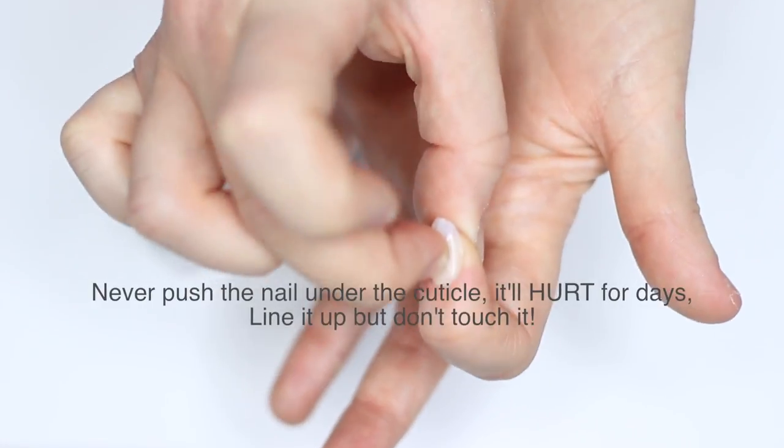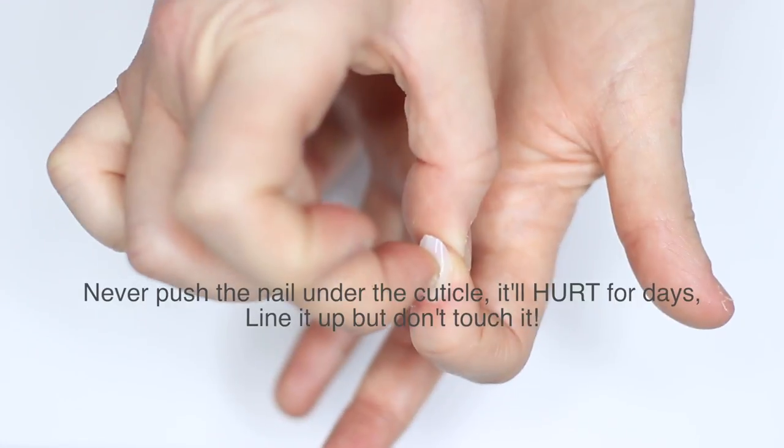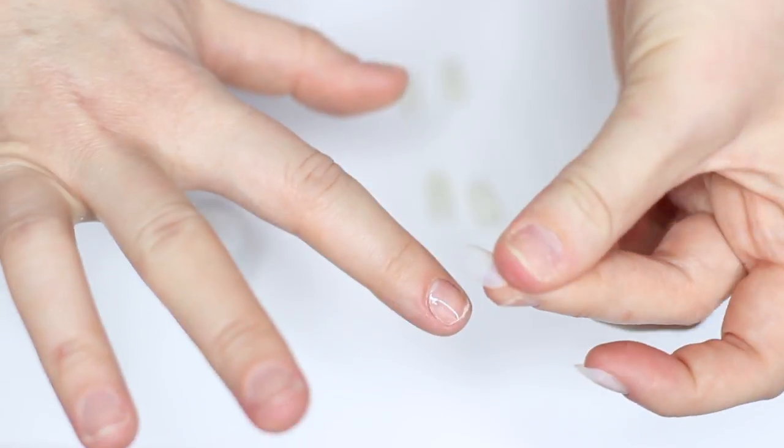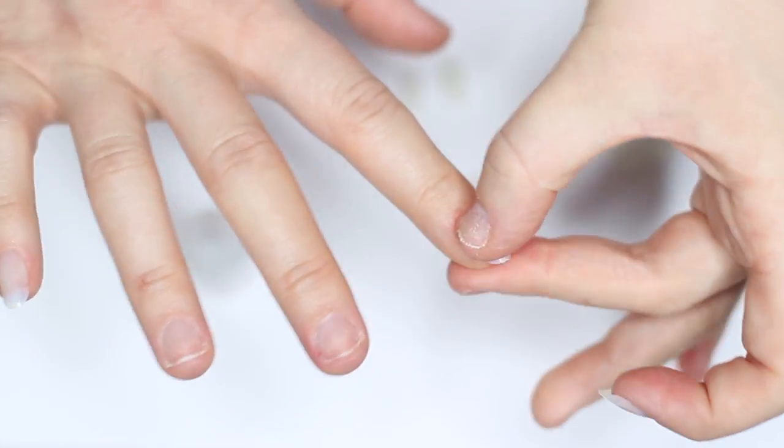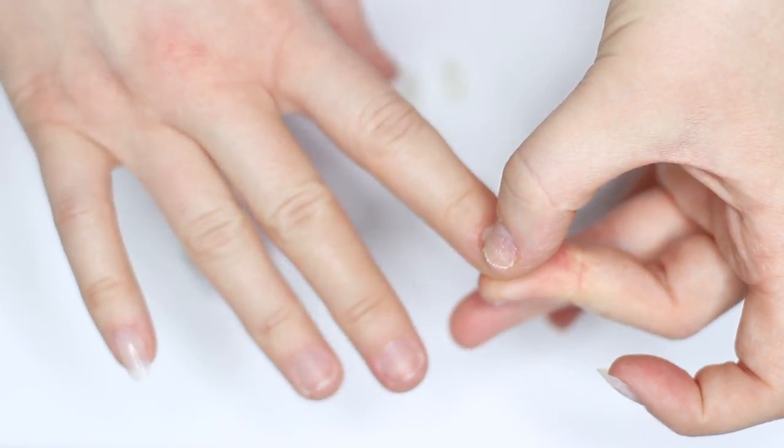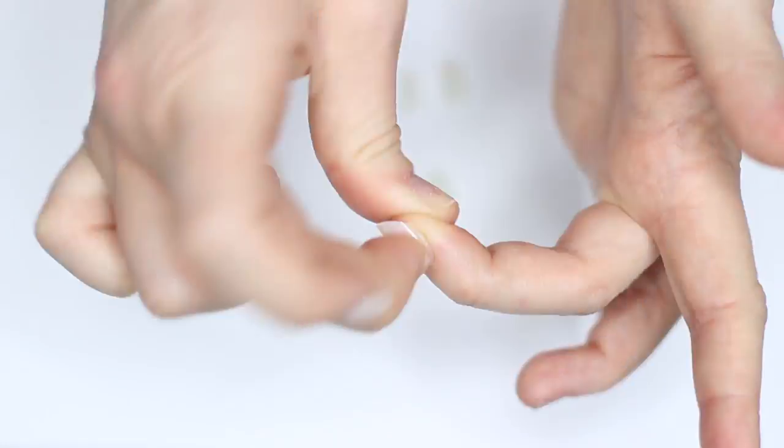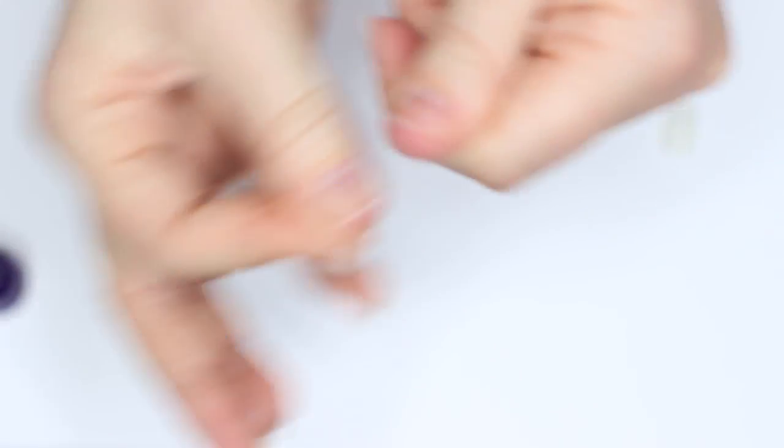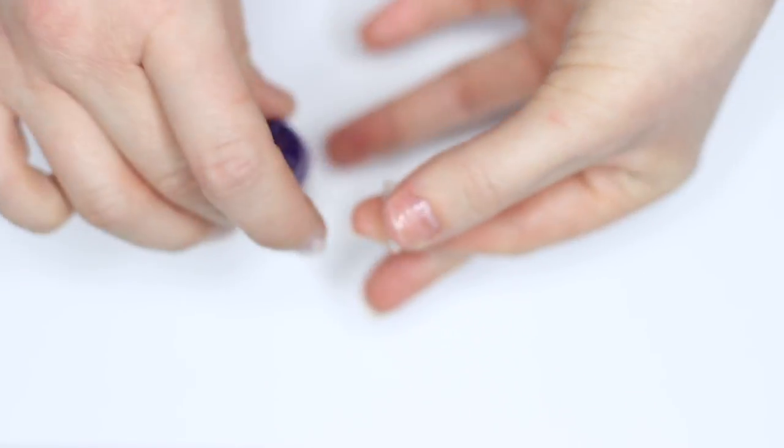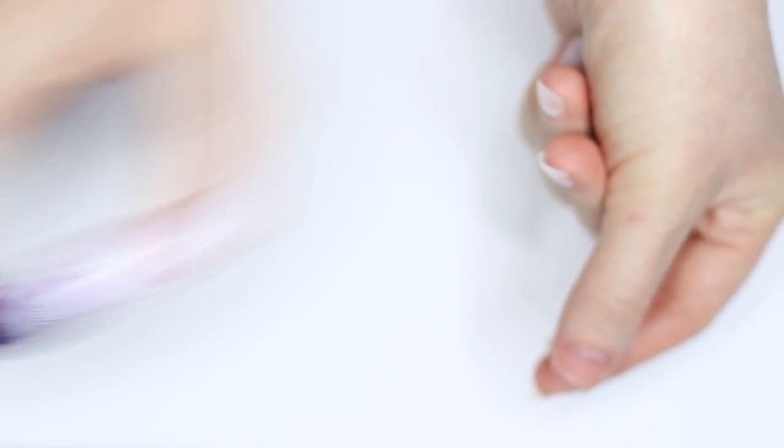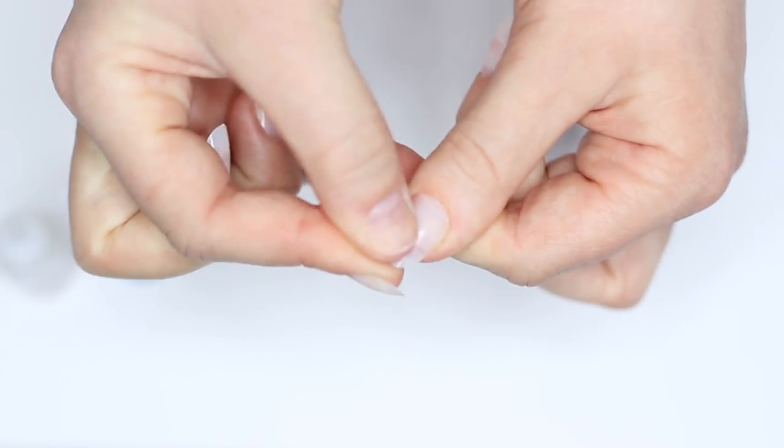Do not push it underneath your cuticle and make sure it's not touching your cuticle either. A lot of people will file their nail bed in order to help it have something to hold onto. However, I find for me, my nails are so dry that I don't need to. Oh, this glue is not sticking. Sometimes the product can kind of separate. So what I want to do is pop the lid on and give it a shake. And now it is sticking perfectly.